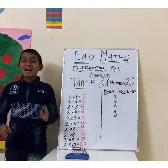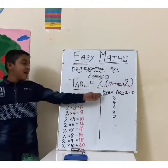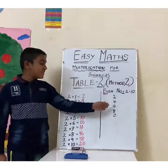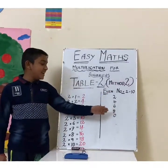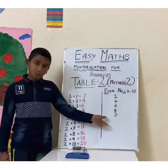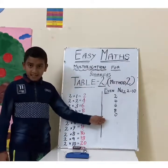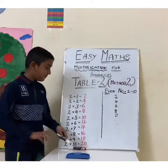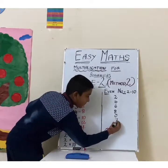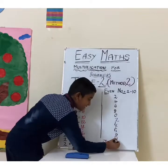Friends, there is another interesting method to calculate the 2 table. Write down the even numbers from 2 to 10: 2, 4, 6, 8, 10. For 10, just write 0, not with the 1. To reach 10 again, write this set of numbers again: 2, 4, 6, 8, 0.